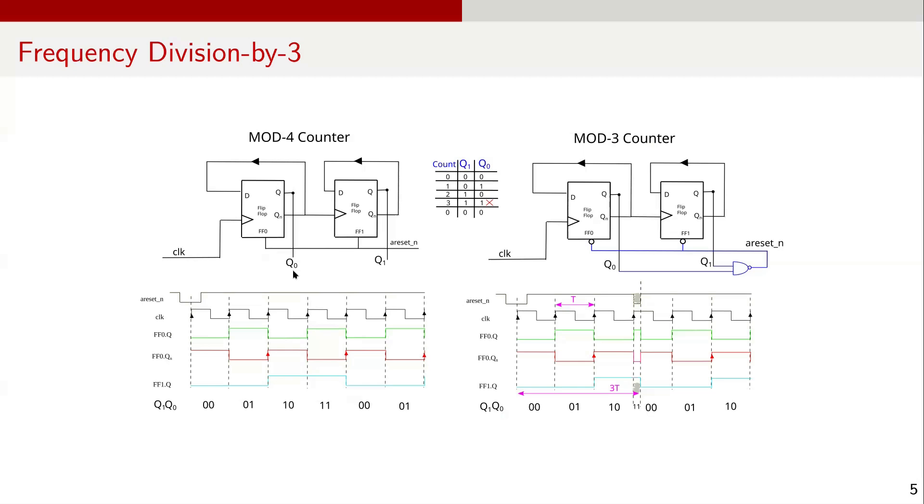To build this, we use 2 D flip-flops, FF0 and FF1. Normally, a counter with 2 flip-flops would count 0, 1, 2, 3 and then return to 0. Here is an example of an asynchronous mod 4 counter that does exactly that.